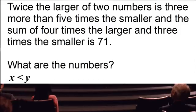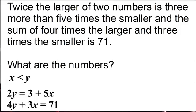Twice the larger of two numbers, two times y, is equal to three more than five times the smaller number x. So that's one equation. The other equation is four times the larger, four y, and three times the smaller, three x, is equal to seventy-one. We now have a series of two equations and two variables.